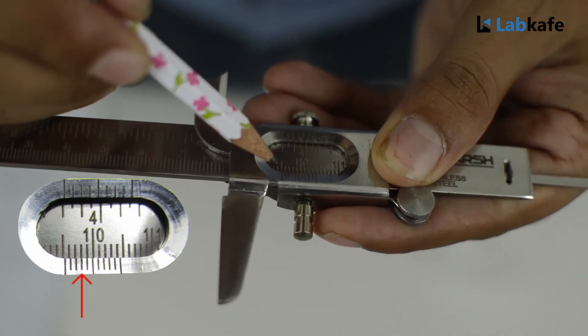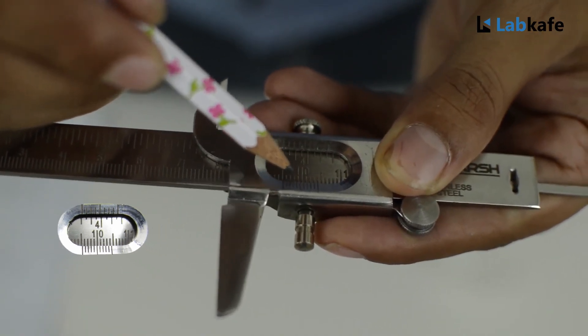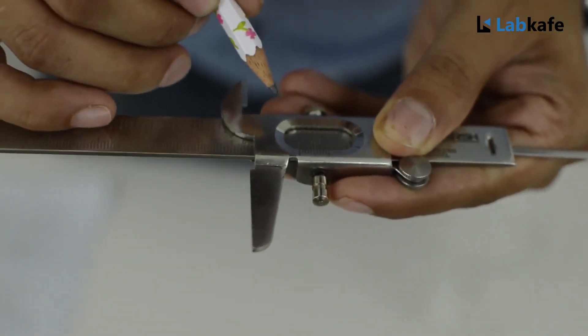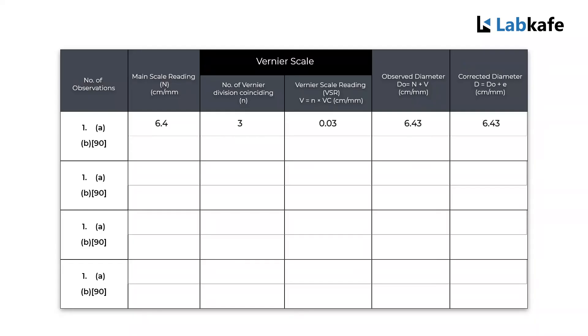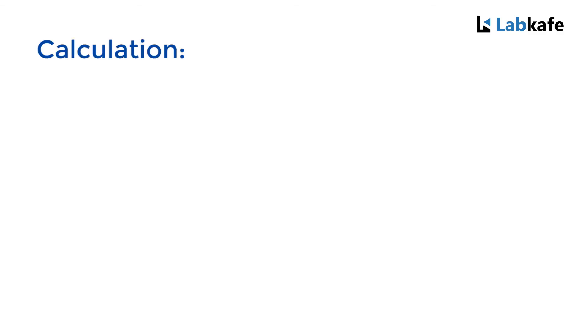Now we take the reading on the scale. The main scale reading is 9.5 and the vernier scale which is coinciding on the main scale is 3. We will repeat the same procedure to get more data in our table. Finally, we will correct the zero error and get the mean depth of the beaker.